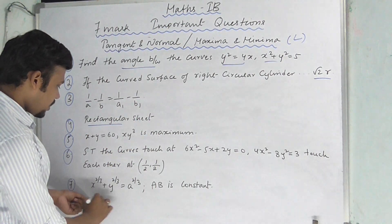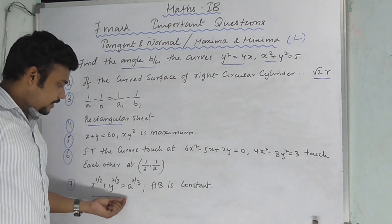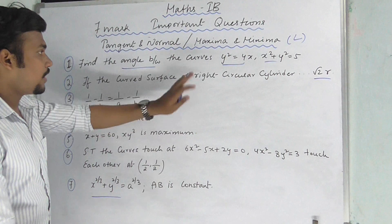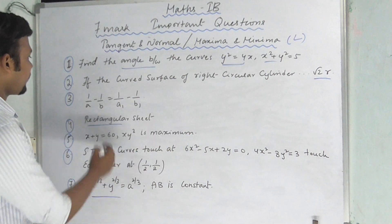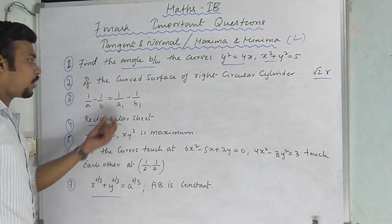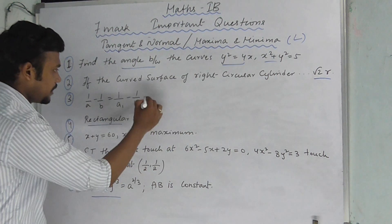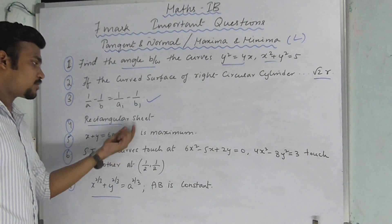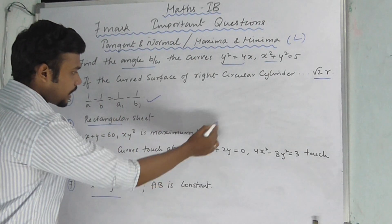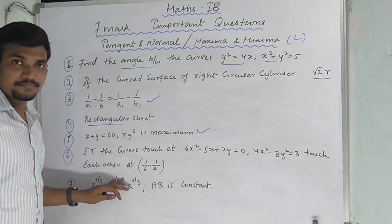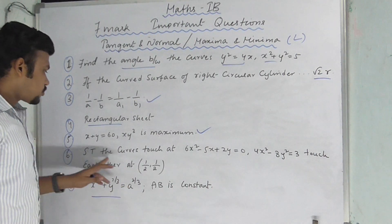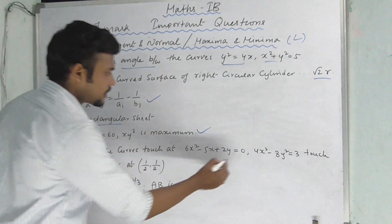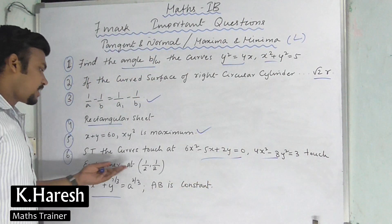This one: x^(2/3) + y^(2/3) = a^(2/3), where a is a constant. And another important problem: 1/a − 1/b = 1/a₁ − 1/b₁. Very important problem. And x + y = 60, and xy³ — so if you can choose the two columns: this curve touches each other at a point. There are seven types of columns.